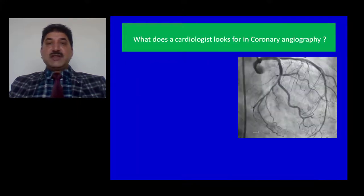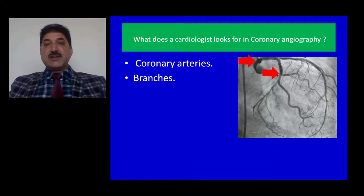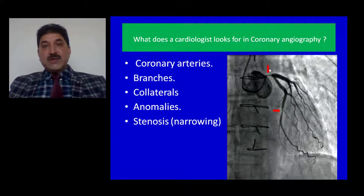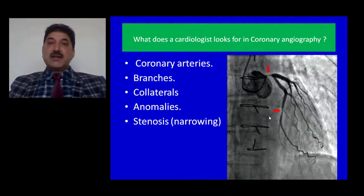What do we see in this angiogram? We see the left coronary artery, its branch the left anterior descending, and the circumflex branch of the left coronary artery. In this coronary angiogram, the stenosed left coronary vessel is demarcated by a vertical red arrow, and the stenosed left anterior descending is marked by a horizontal red arrow.